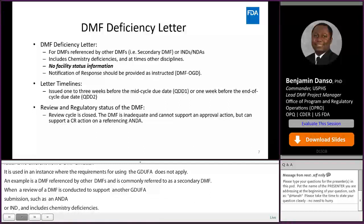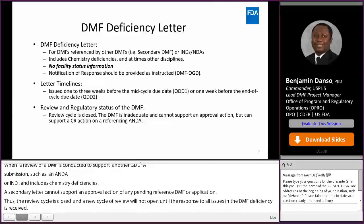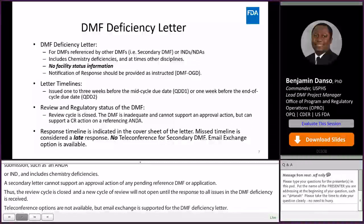A new cycle of review will not open until a response to all issues in the DMF deficiency is received. Teleconference option is not available, but email exchange is supported for the DMF deficiency letter. Response timeline is indicated in the cover sheet of the letter. A missed timeline is considered a late response. No teleconference for secondary DMF, but email exchange options are available.